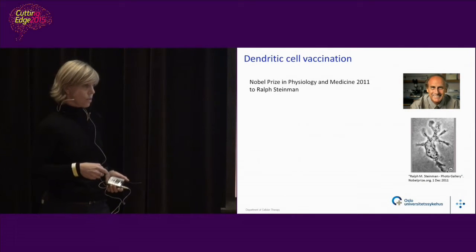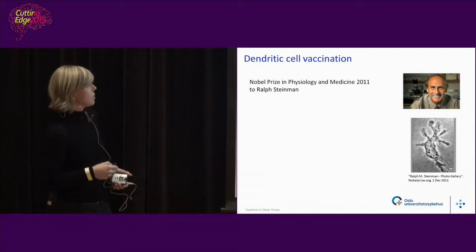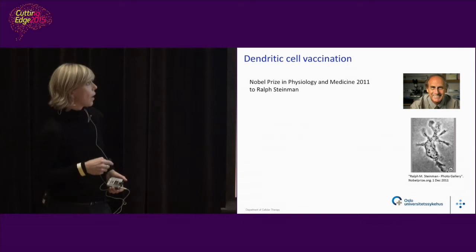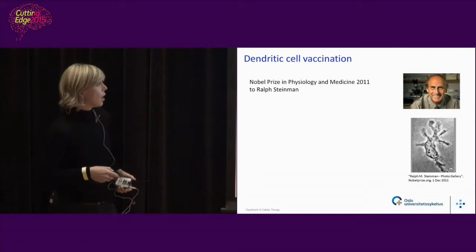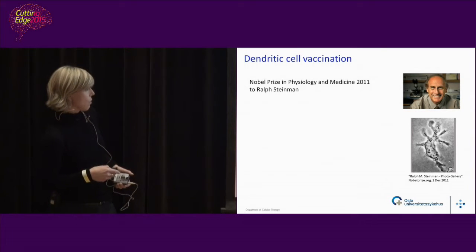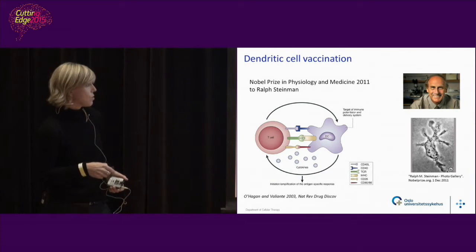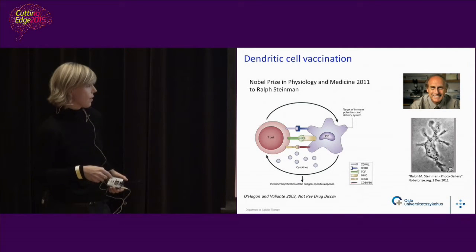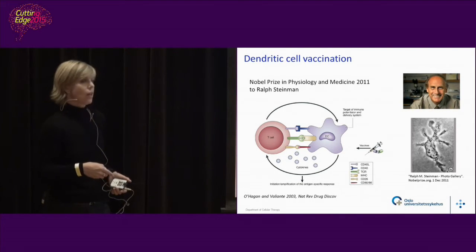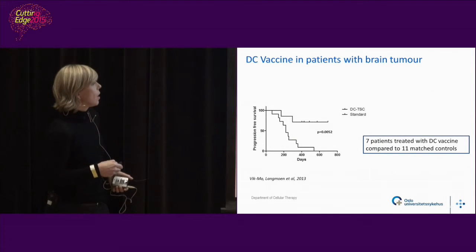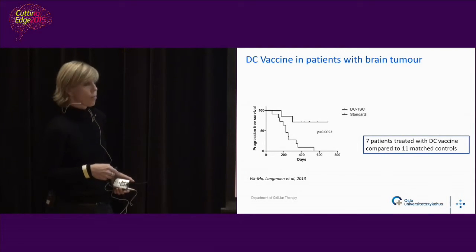We also use dendritic cells — specialized cells — as vehicles for the vaccine. Dendritic cells were discovered by Ralph Steinman, who received the Nobel Prize in 2011 for this discovery. This is the first photo ever of one of these cells. He died of cancer himself just around the time he received the Nobel Prize. Dendritic cells can be modified to show fragments of tumor cells to T cells, activating them. We can make these into a vaccine and give them to patients, which has been done at the Radium Hospital in collaboration with the Department of Neurosurgery.